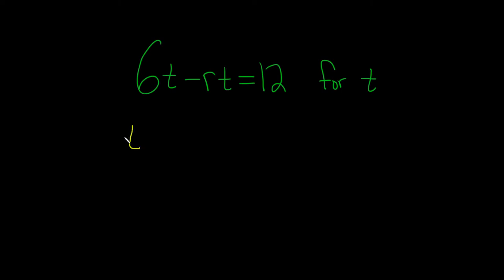I'm going to write the t here and then I'll put a parentheses here. And then the question you ask is what do you multiply by t in order to get 6t? Well, 6. And then minus, and then what do you multiply by t in order to get rt? Well, you're just missing an r.